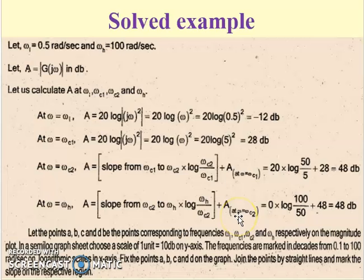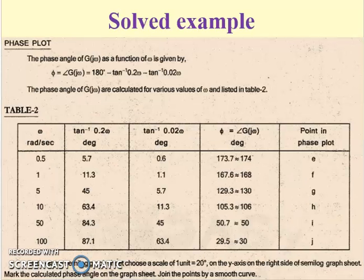These points have been marked as a, b, c, and d, where a is -12 dB, b is 28 dB, and c and d are both 48 dB. These are the magnitudes corresponding to the frequencies lower, corner frequency 1, corner frequency 2, and the higher frequency. Once these gains are marked, we always use a scale - it should be straight lines. We join the points using straight lines by scale.